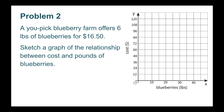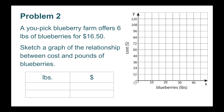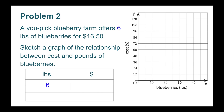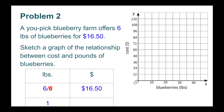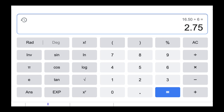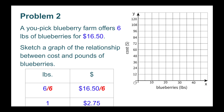Number 2. A you-pick blueberry farm offers 6 pounds of blueberries for $16.50. Sketch a graph of the relationship between cost and pounds of blueberries. First, I'm going to build a table. I have pounds on the left and dollars on the right. They tell us that you get 6 pounds of blueberries for $16.50. 6 pounds divided by 6 equals 1 pound. Since I divided the pounds by 6, I need to divide the dollars by 6. $16.50 divided by 6 is $2.75. So 1 pound would cost $2.75.